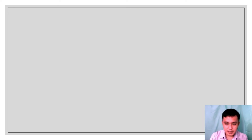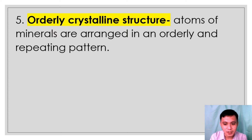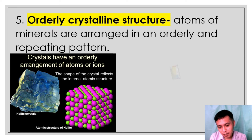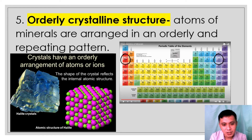The last characteristic of minerals is that they are arranged in an orderly crystalline structure. We are highlighting the atom arrangement of certain minerals. Atoms of minerals are arranged in an orderly and repeating pattern. For example, halite crystal — in its atomic structure model, there are two colors: pink and green. The large pink color represents the atom of sodium, and the small green represents the atom of chlorine. The atoms of sodium and chlorine are arranged in an orderly and repeating pattern. The shape of the crystal reflects the internal atomic structure.